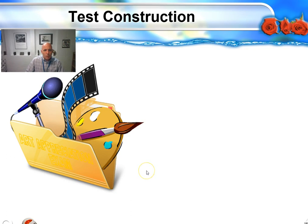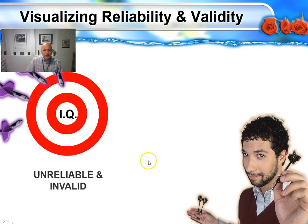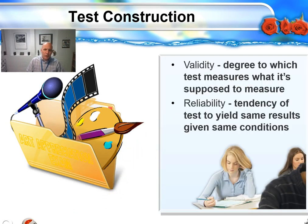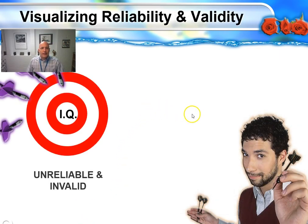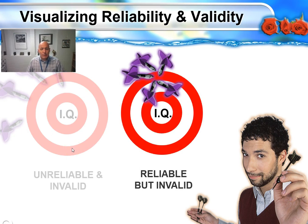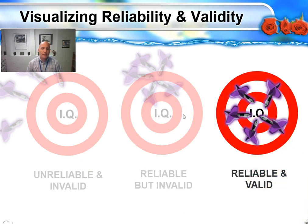When we look at test construction, some important words come to mind: reliability and validity. Validity is the degree to which the test measures what it is supposed to measure. Reliability is the tendency to yield the same results given the same conditions. If a test is unreliable and invalid, it's not measuring intelligence and not yielding the same results. If a test is reliable but invalid, it's getting consistent results but not measuring intelligence. The best measurement is a test that is both very reliable and very valid — accurately and consistently measuring IQ.